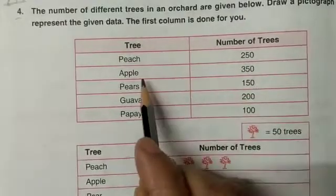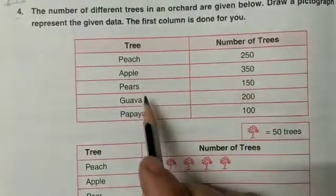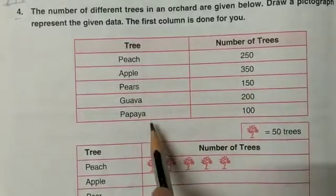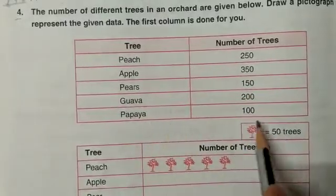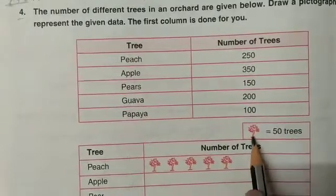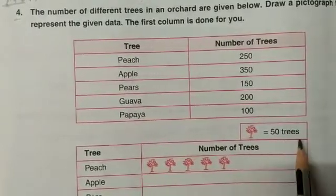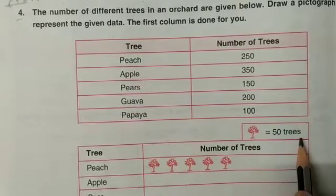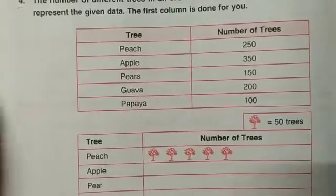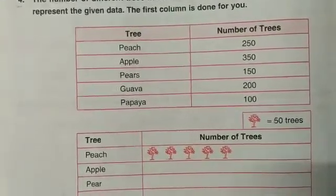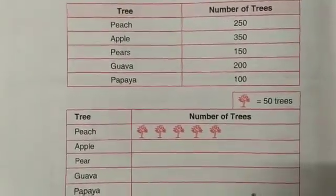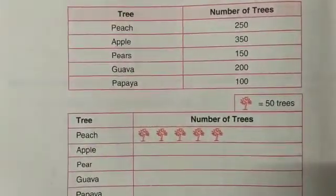The number of trees: peach 250, apple tree 350, pears 150, guava 200, and papaya 100. You can see in this column one tree is equal to 50 trees. So what you have to do — this column is given to you — you have to draw the picture graph to represent the number of trees.